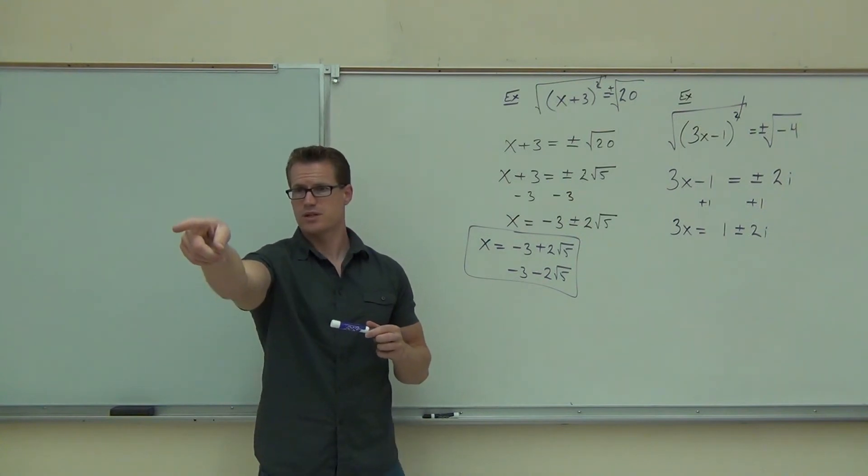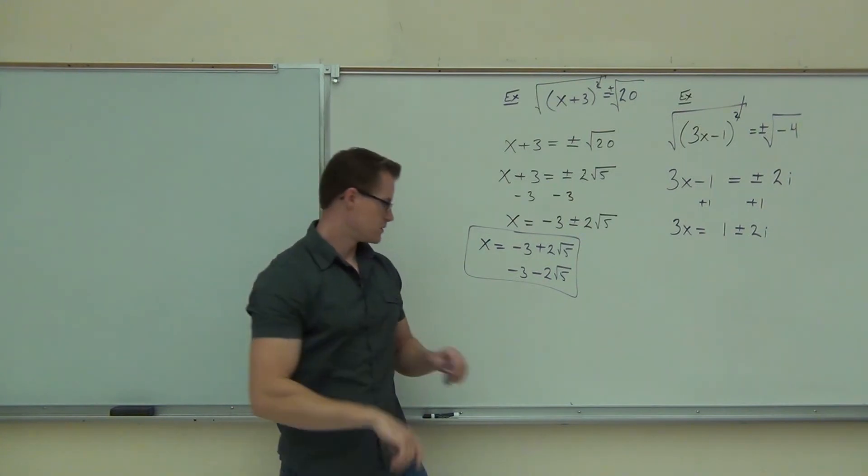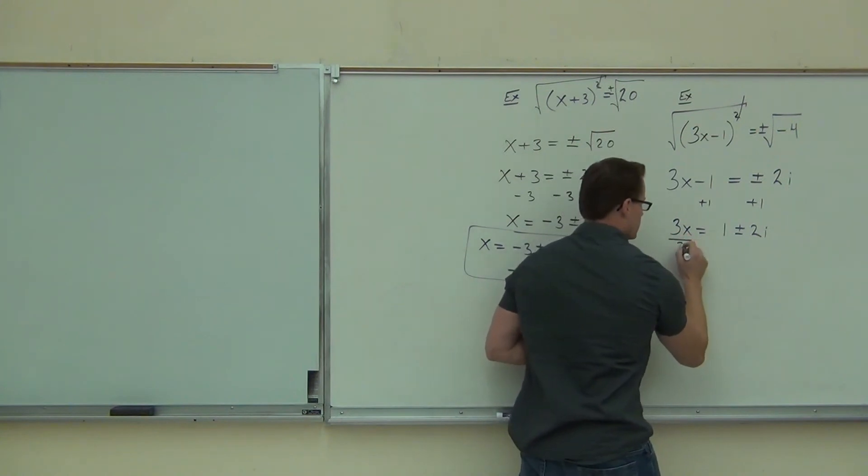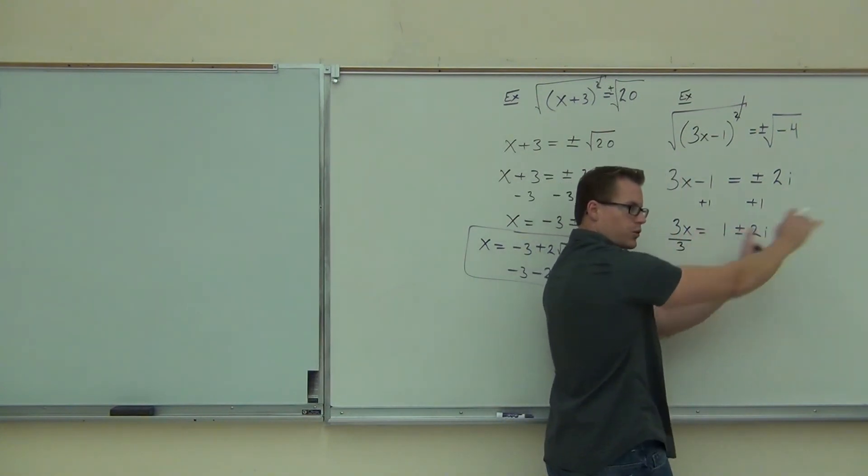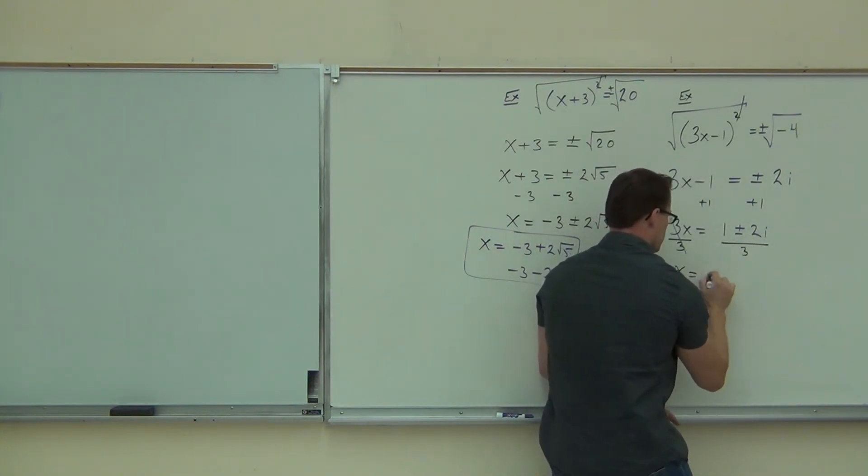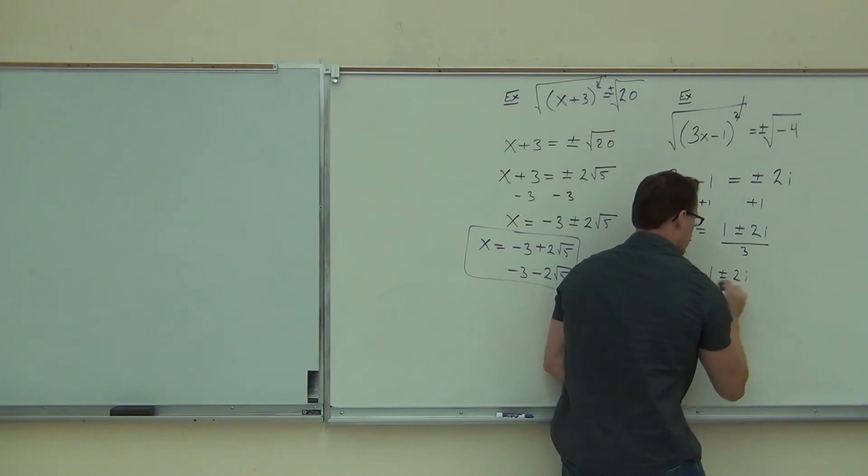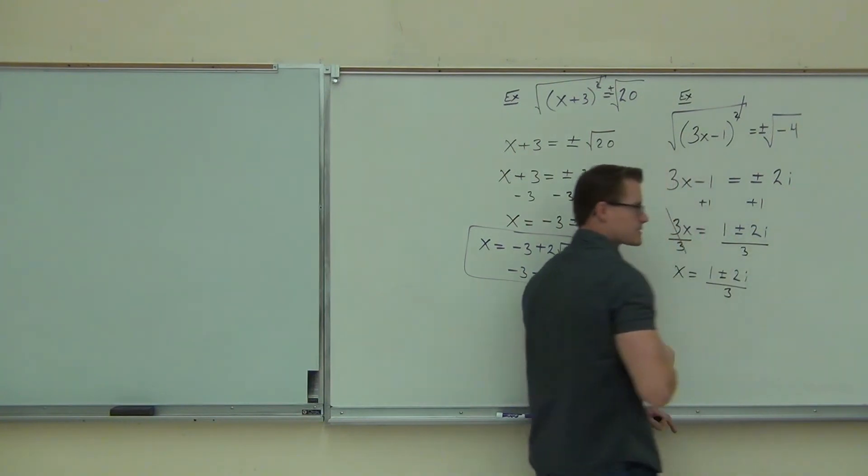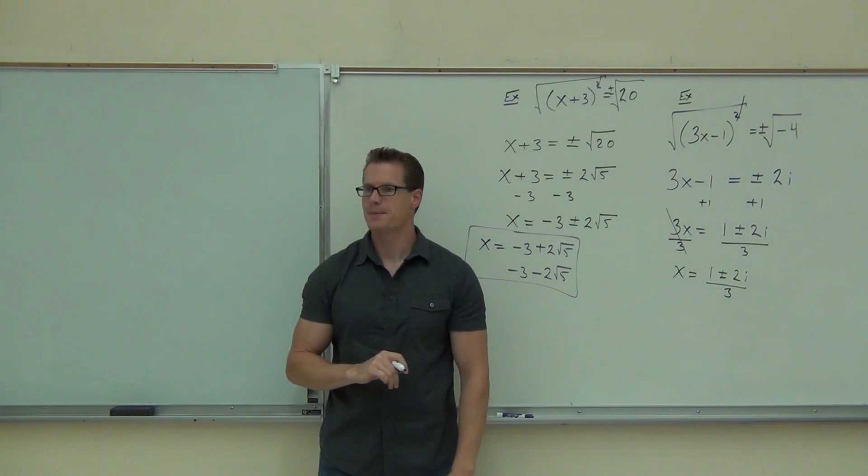No. This row, tell me something. What do you do? Divide by 3. If I divide by 3, that means I divide the whole thing by 3. True? Yes. So, x equals 1 plus or minus 2i over 3. Now, that might look a little nasty to you, but I want you to really think about it. Look at what happens.